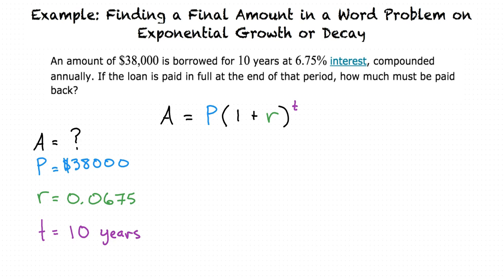We will now substitute these numbers into the formula, written as a equals 38,000 times the quantity of 1 plus 0.0675, raised to the 10th power.